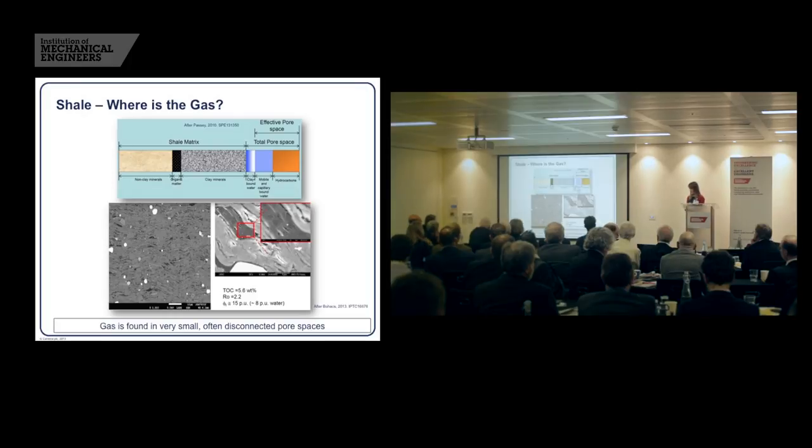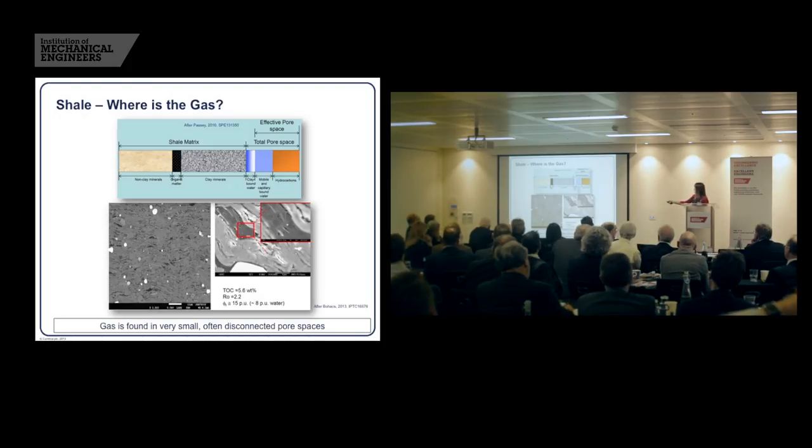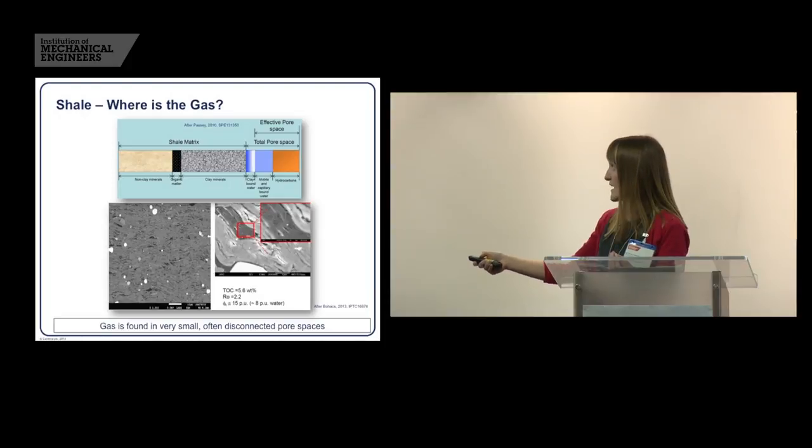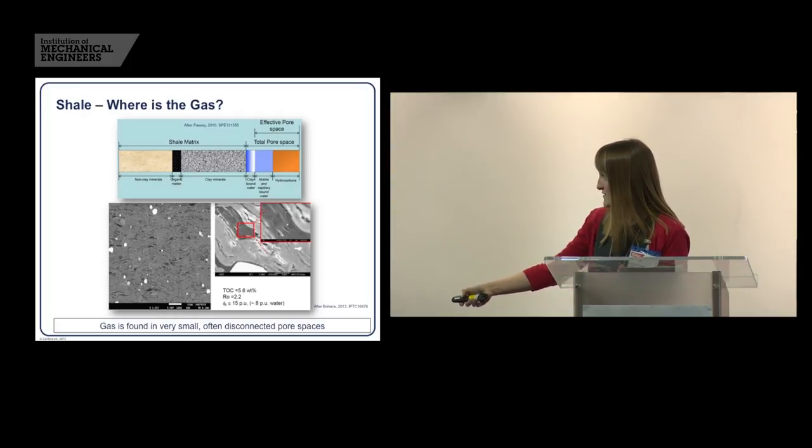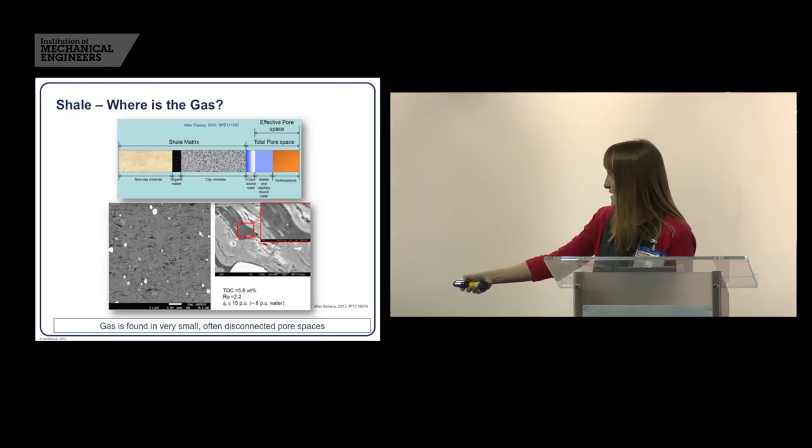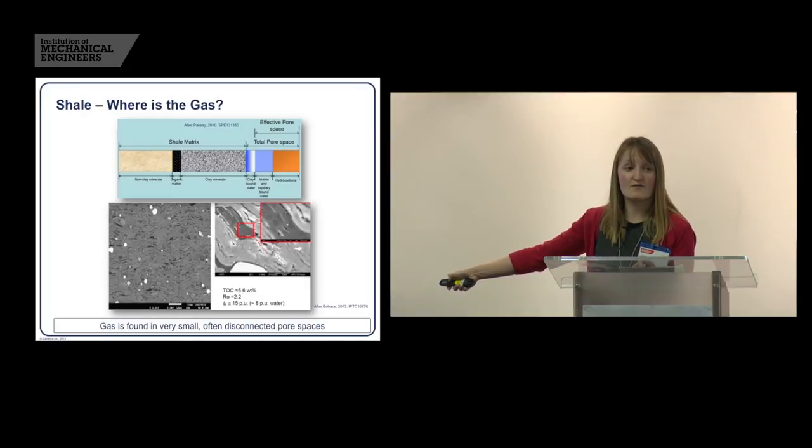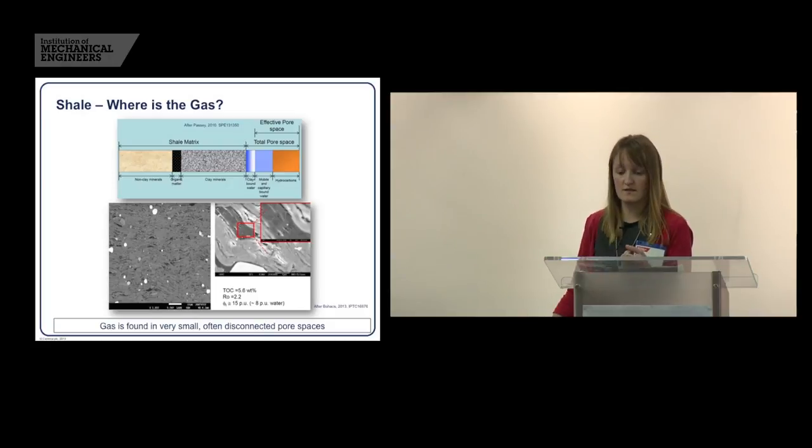So where do you find the gas? Well, this is something similar to what we've seen before, but the rock is made up, the solid bits of the rock is made up of non-clay minerals, organic matter, clay minerals. And then the gaps between that is filled with clay-bound water, which we've talked a bit about, mobile water, and then the hydrocarbons. But the hydrocarbons are found in very, very, very small places. So this is a scanning electron microscope image. The scale bar there is 10 microns. And if we actually zoom in on one of these little black specks here, this is a one micron scale bar. This is a piece of organic matter, and in that organic matter are the pores. That's where the gas is. So we have to fracture, shatter the rock to connect all of those pores and produce the gas.